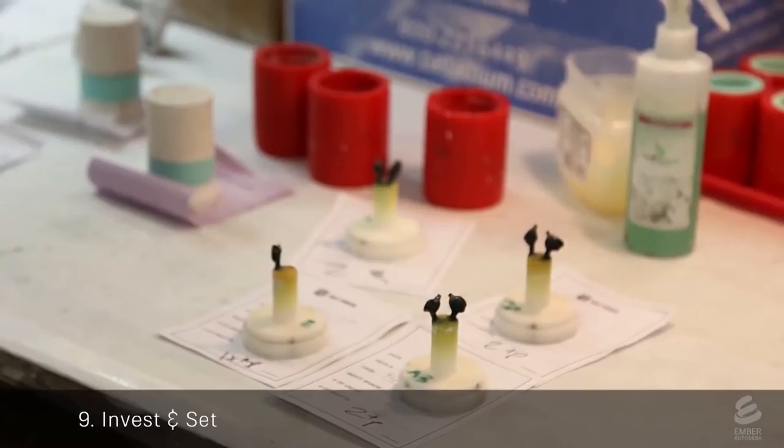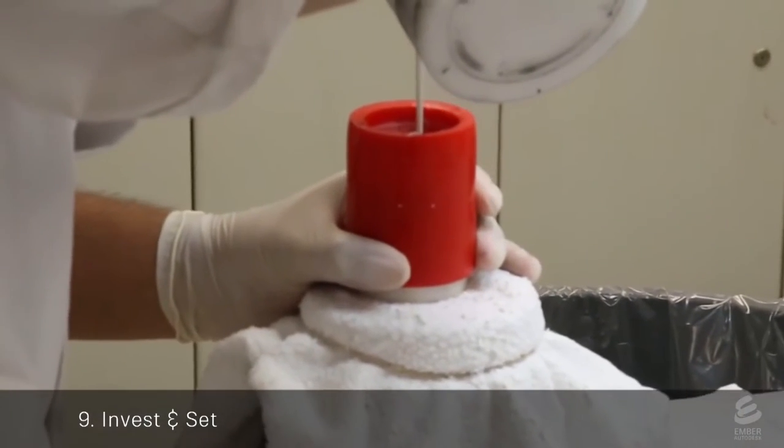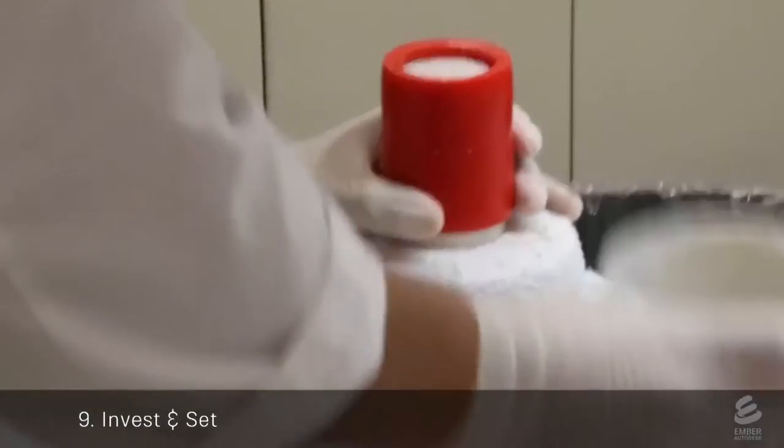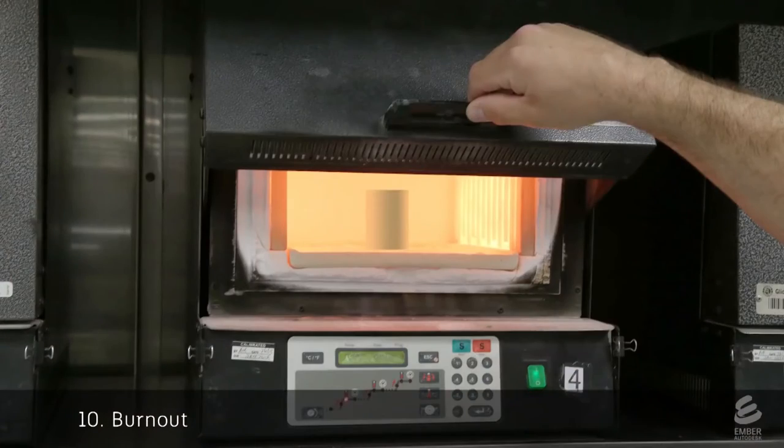The sprued crowns are put into a mold and a technician mixes up the investment material and pours it around the crowns. When the investment is completely set, it's put into an oven until the heat completely vaporizes the wax and 3D printed crown, leaving a crown-shaped void inside the investment.